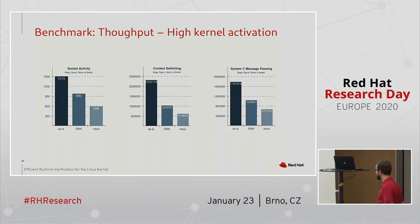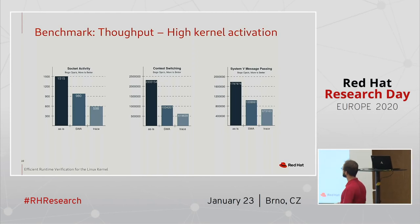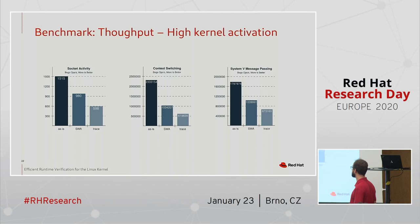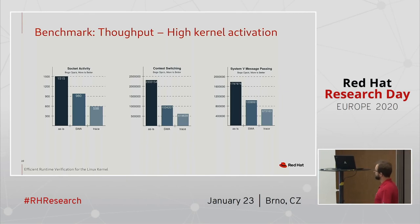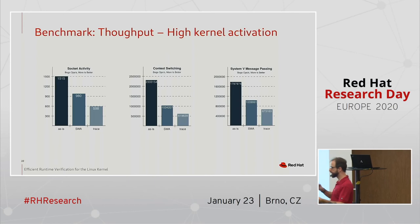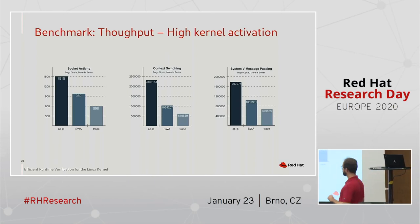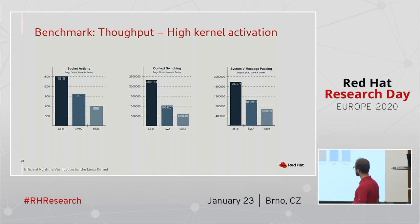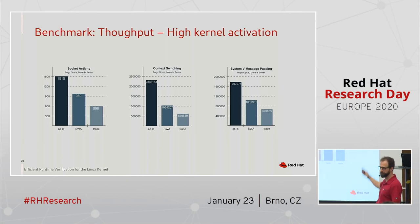When we go to kernel-heavy workloads, we have some impact — that's expected. Here is tracing, here is the system running without trace, and here is the system with verification. We can consistently see that doing the verification puts less impact on system performance than only tracing it, because tracing requires more operations and more memory to be copied from one place to another. In the end, doing the verification is even more efficient than tracing for later user-space verification, for example.